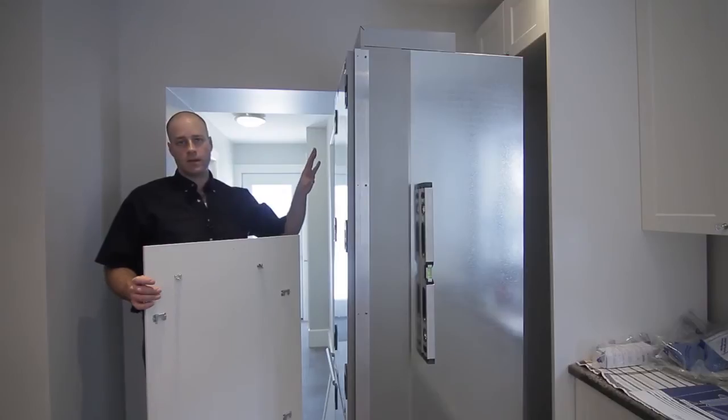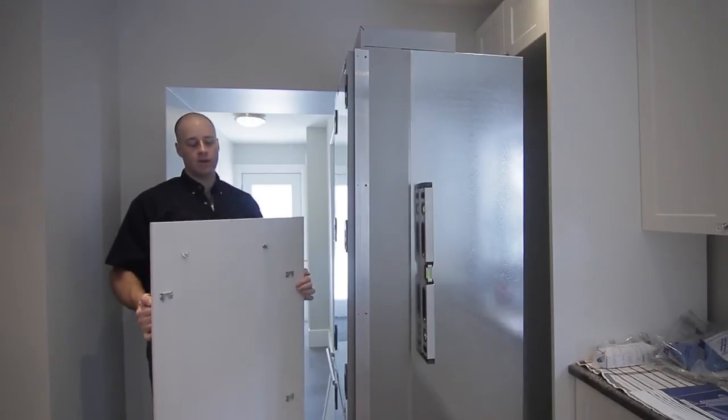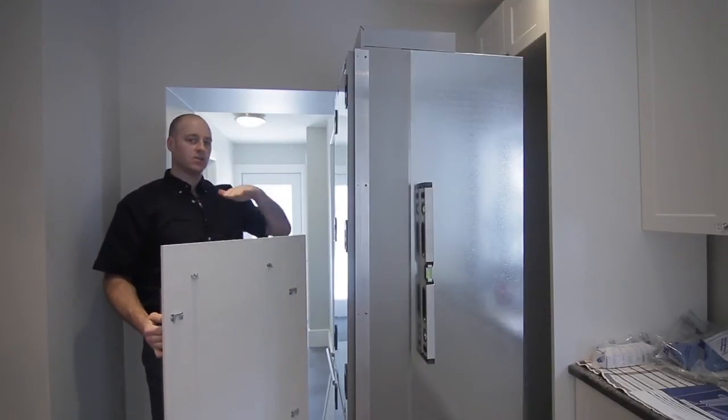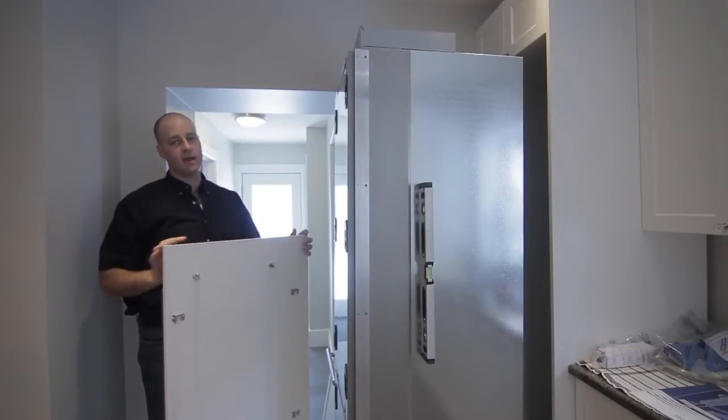We have to do this with the appliance out of the niche because of how the door goes on and then drops down. If we don't have the head space, if we were in the niche, we wouldn't be able to get the panel high enough and then drop it down. So you have to put the panels on first.